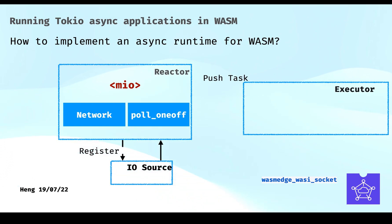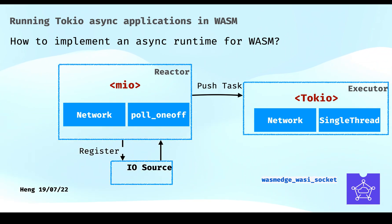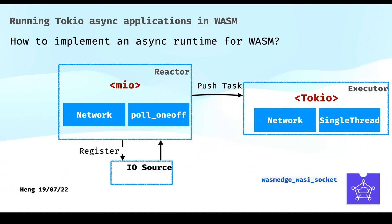Let's take a look at the executor — Tokio. Tokio is a multi-threaded runtime, and we can only use the single-threaded mode of Tokio. In addition, we replaced the network component in Tokio with the wasi-sockets crate mentioned above. After all this work, we can run Async applications in WebAssembly with the help of Tokio.